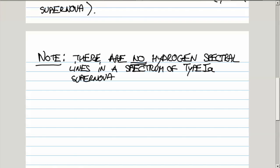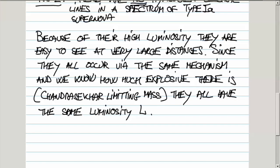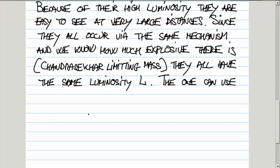Because they are very bright, they are easy to see at very large distances. Moreover, they all have the same mechanism, and we know how much explosive there is—it's about Chandrasekhar limit, Chandrasekhar mass. We know, and we can determine their luminosity based on the observations for nearby ones, and then we know how much luminosity the more distant ones have.